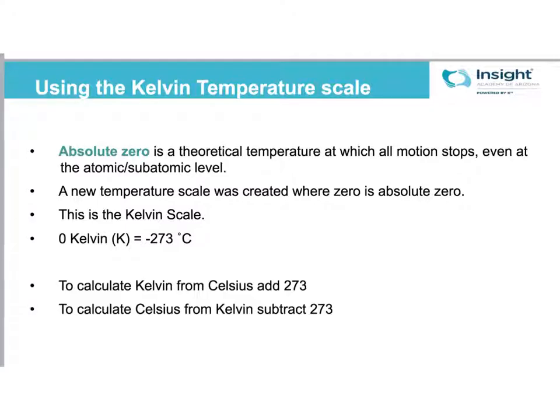So again, absolute zero is the theoretical temperature at which all motion stops, even at the atomic-subatomic level. It's a new scale that has no negative numbers, so it starts at zero. And we have set zero Kelvin equal to negative 273 degrees Celsius. If you think about zero degrees Celsius being freezing point, negative 273 is pretty darn cold. You wouldn't be able to survive at negative 273.